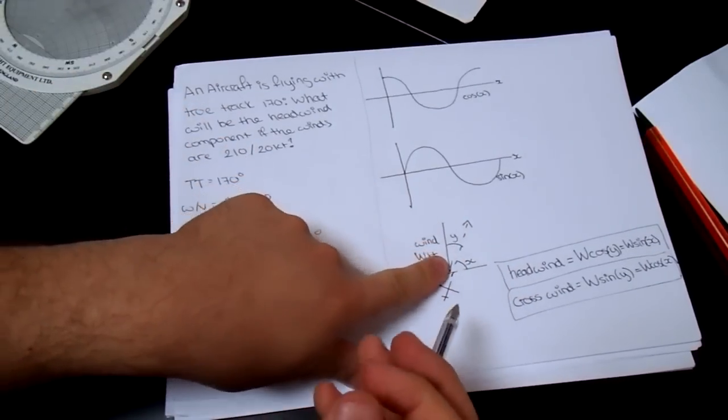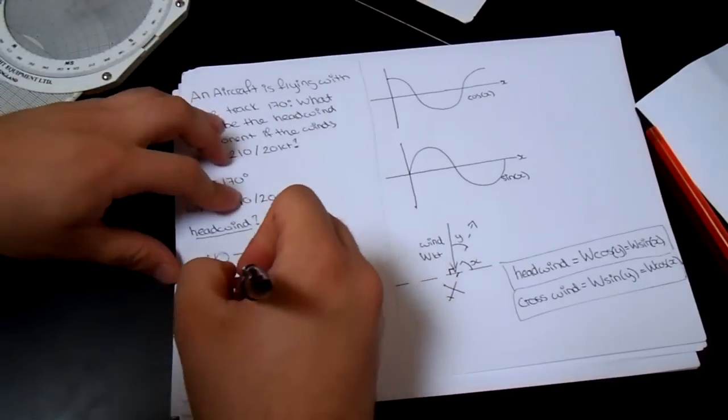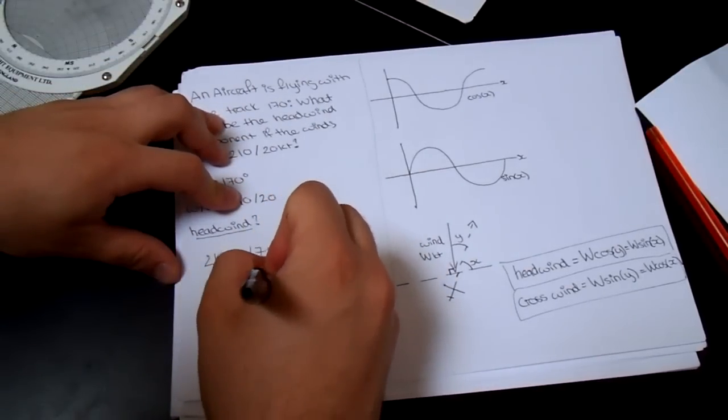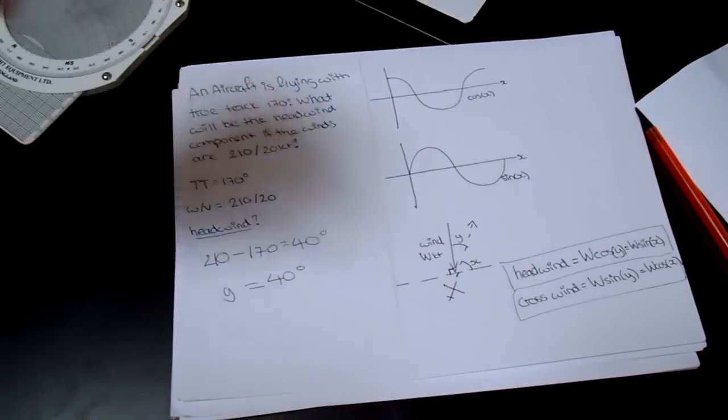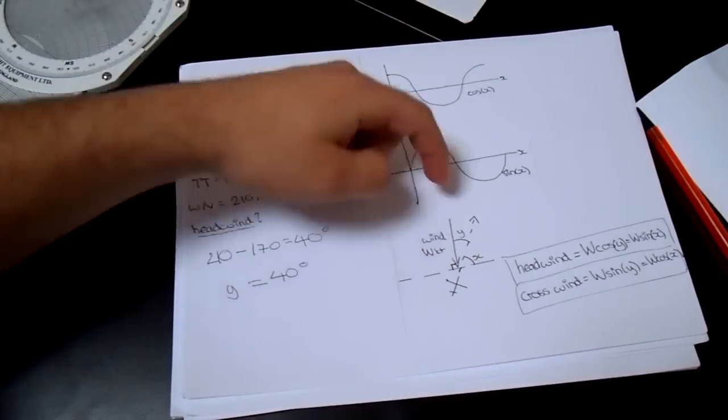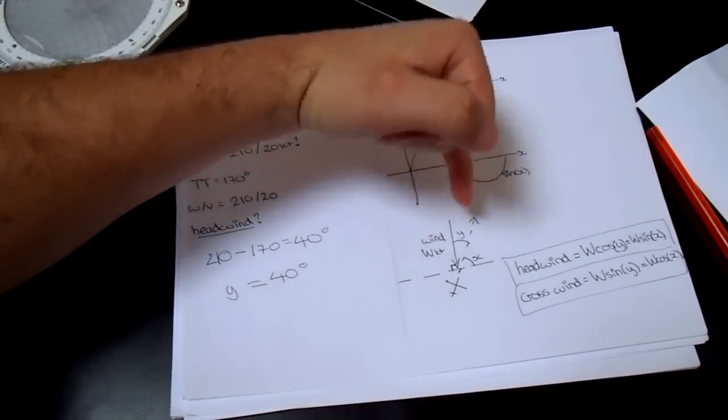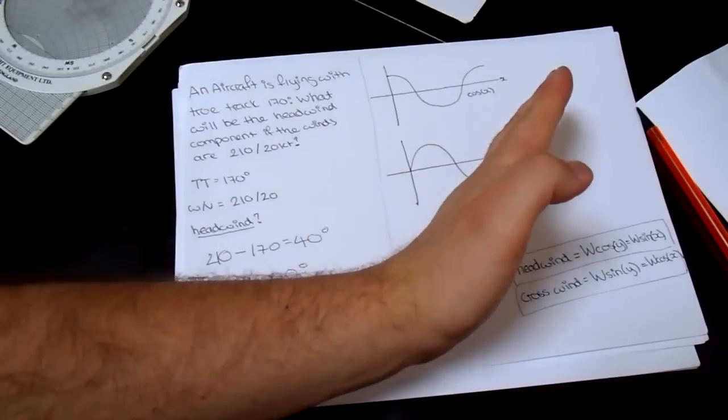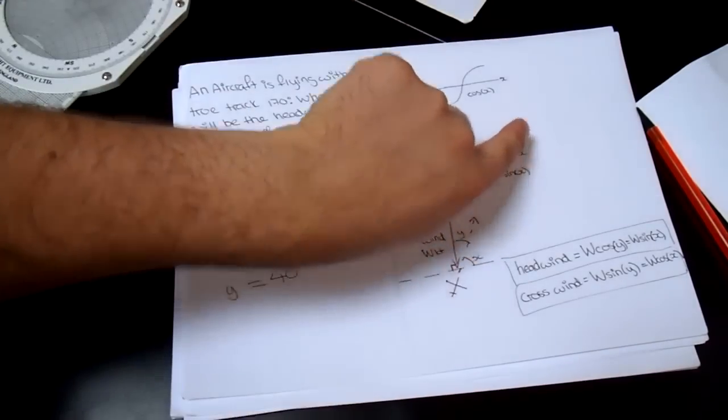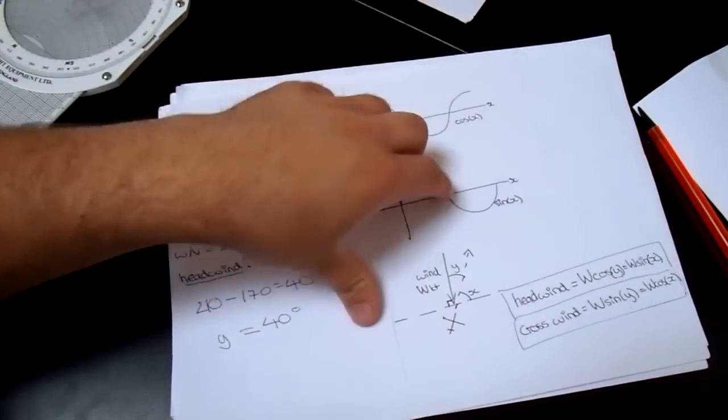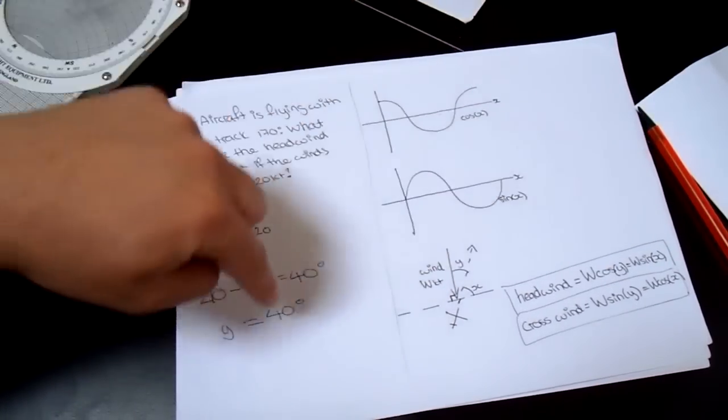So if we're to use this diagram, we know that Y equals 40 degrees. Because if we imagine that this is actually coming from the 210, and this is the direction 170, so we basically know that this is 40 degrees.